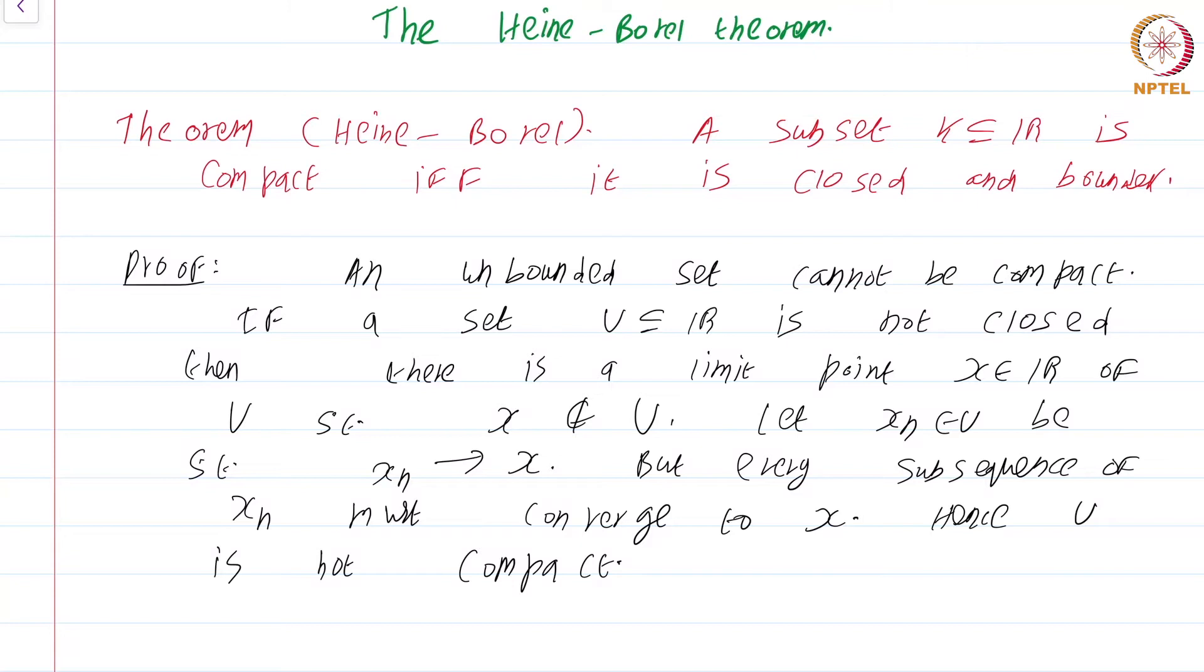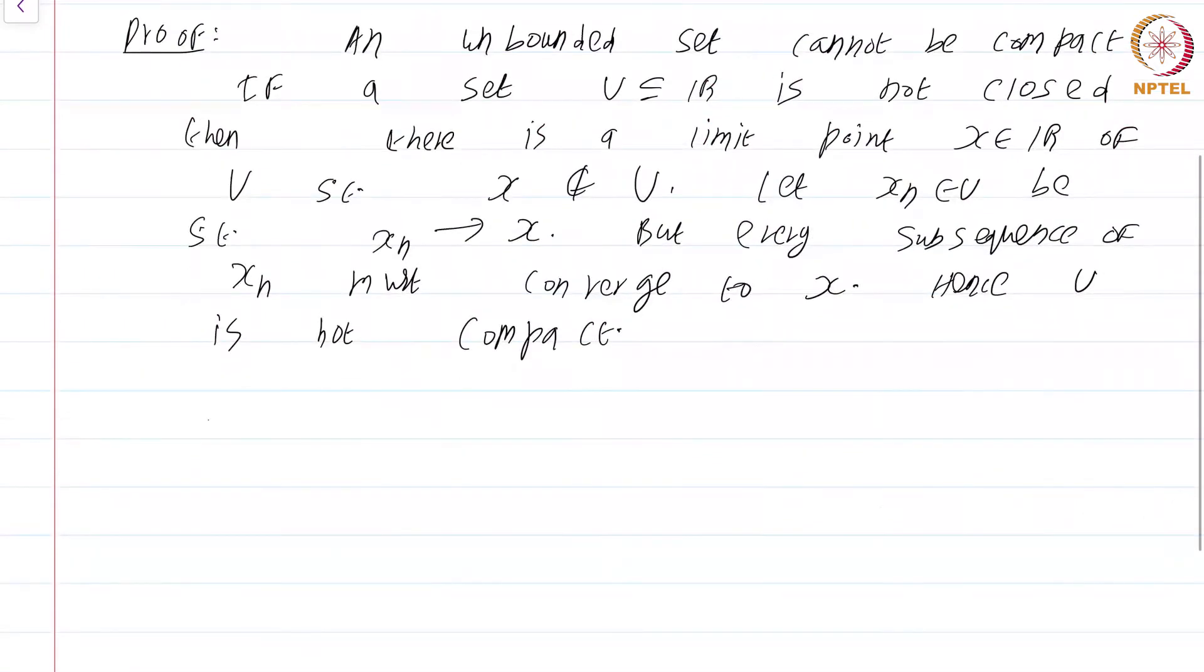So we have proved one direction. We have shown that if a set is compact then necessarily it has to be closed and bounded. Now, let K subset of R be closed and bounded.